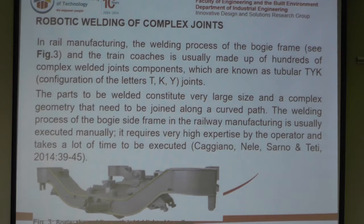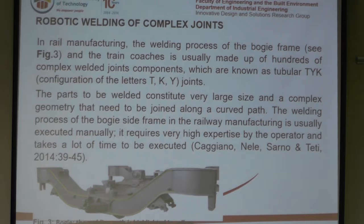Now this is what my research is all about. In real manufacturing, the welding process of the bogey frame is complex — train coaches are usually made up of hundreds of complex welded joints and components, known as the TYK configuration. The parts to be welded constitute a very large size and complex geometry that need to be joined along a curved path. The welding process of the bogey frame in railway manufacturing is usually executed manually.